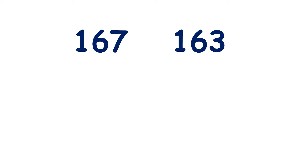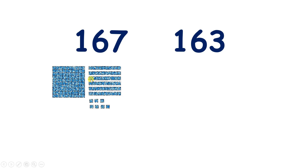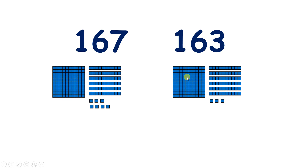Now we have 167, so one hundred, six tens, seven units. Here we have the same number of hundreds, the same number of tens, so we can compare the units. Seven is greater than three, so one hundred and sixty-seven is greater than one hundred and sixty-three.